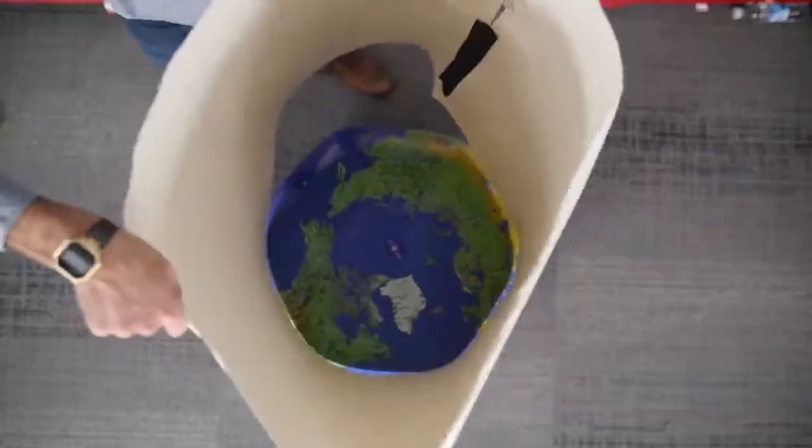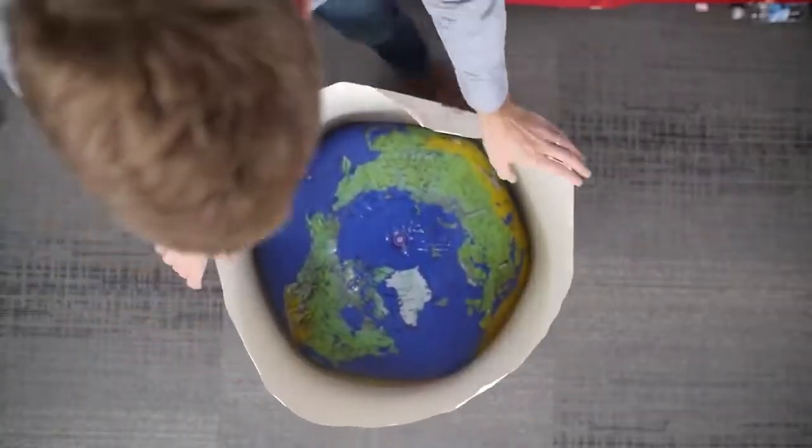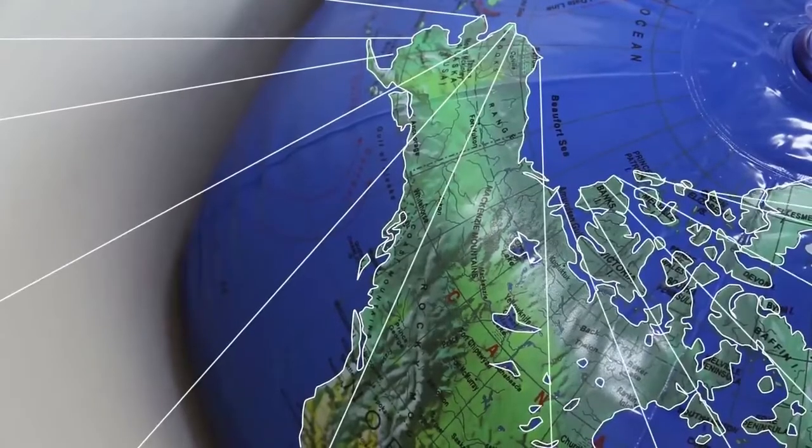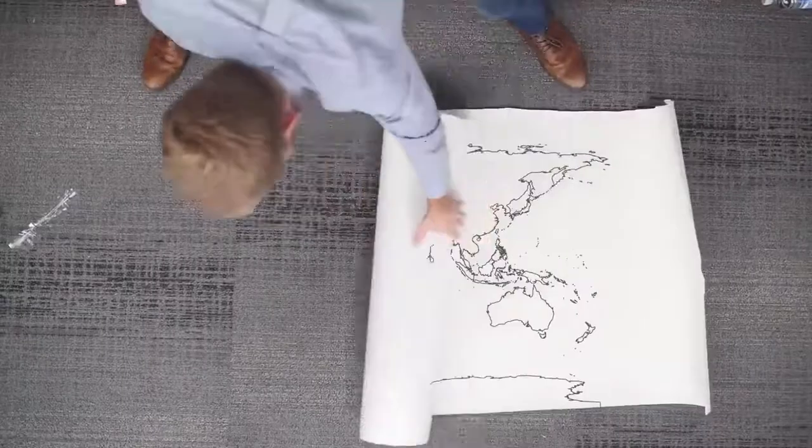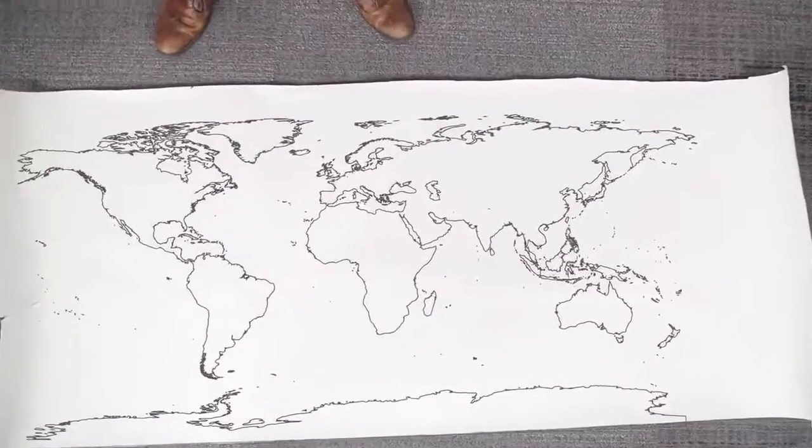Imagine putting a theoretical cylinder over the globe and projecting each of the points of the sphere onto the cylinder surface. Unroll the cylinder and you have a flat rectangular map. But you could also project the globe onto other objects.